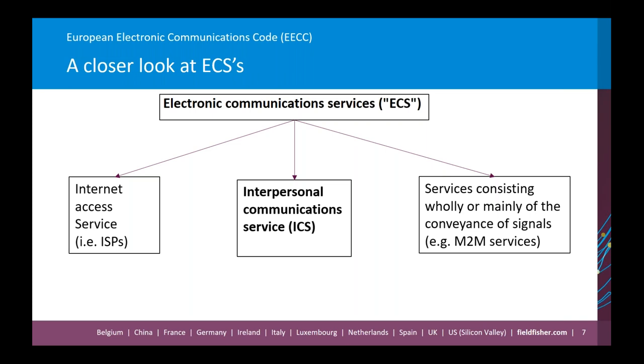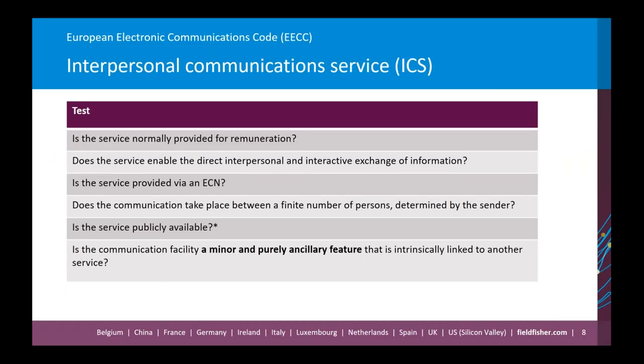To establish whether a service falls in scope of an ICS, there are several parts to the test. First, consider whether the platform or service is normally provided for remuneration. Per Recital 16, remuneration includes not just payment in money, but also services supplied for the provision of personal data or other data if the service provider can extract value from such data. Next, consider whether the platform or service enables interpersonal and interactive exchange of information — interactive meaning the recipient can respond, so machine-to-machine communications are excluded.